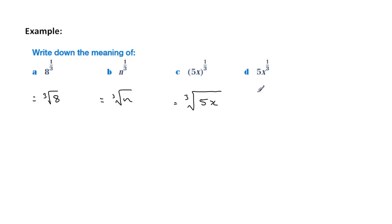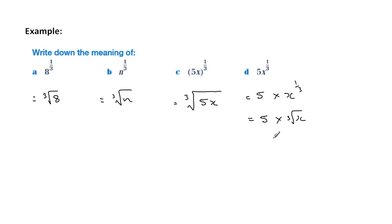Whereas in the last example, if we separate it out first — that makes it a little easier — the 5 is not influenced by the third, just the x. So that's the cube root of x. We can then drop the times sign and move them together. Only the x has the cube root, not the 5.